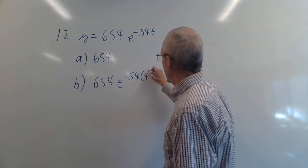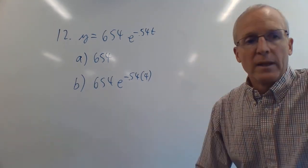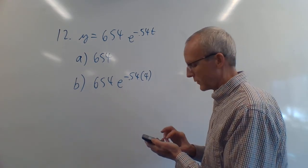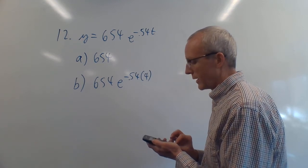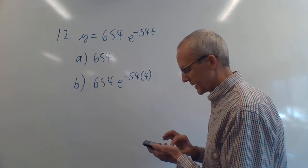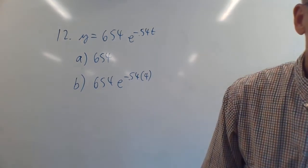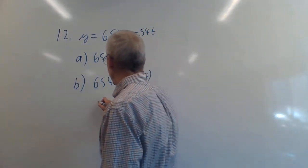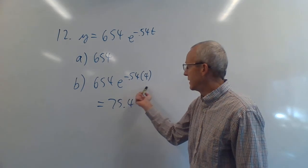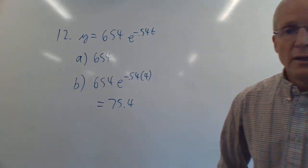Calculate 4 × 0.54 = 2.16, make it negative, raise e to that power, then multiply by 654. The result is approximately 75.4 yeast cells. That makes sense — the population is shrinking, so it should be less than 654 after 4 hours.